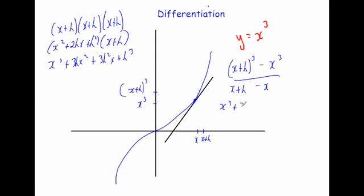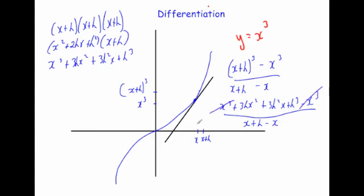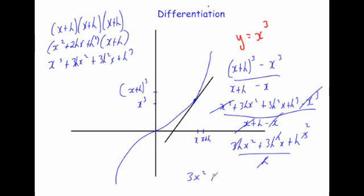On the top line we have x cubed plus 3hx squared plus 3h squared x plus h cubed, subtract x cubed, all over x plus h subtract x. The x cubed terms cancel and the bottom terms cancel, leaving 3hx squared plus 3h squared x plus h cubed all over h. Cancelling the h's gives 3x squared plus 3hx plus h squared. As h tends to zero, the terms with h tend to zero, so the gradient of any point on the x cubed graph is 3x squared.